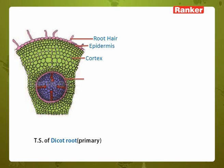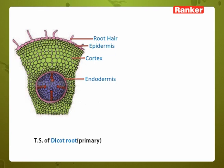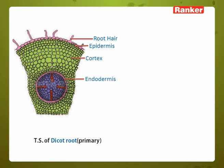Next layer is endodermis. Endodermis is barrel-shaped cells; it is a bridge between the cortex and the inner vascular tissue system. In maize, for example, you will see the bands of Casparian strips present in the endodermis.